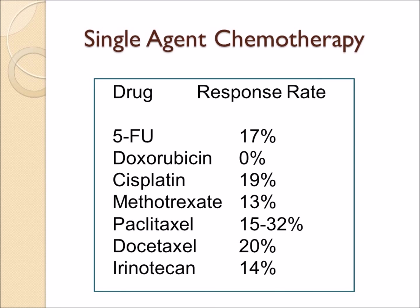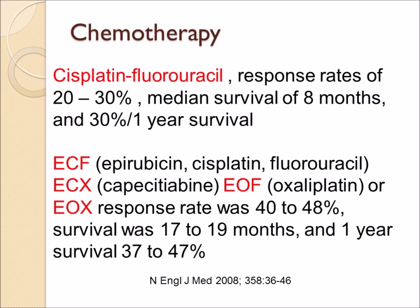There are chemotherapy drugs available for esophagus cancer. Most single agents have a fairly low response rate, but when drugs are combined — either two drugs (a doublet) or three drugs (a triplet) — the response rate is much higher: 20 to 30% with a doublet and up to 40 to 48% with three drugs. Median survival in patients with advanced disease can improve from eight months up to 17 to 19 months with more complex combination chemotherapy regimens.